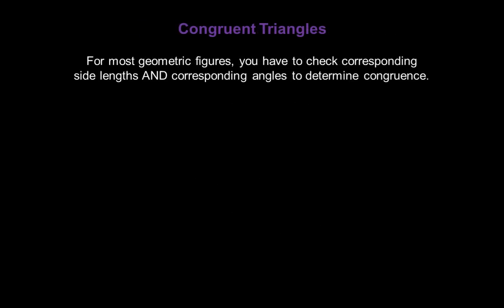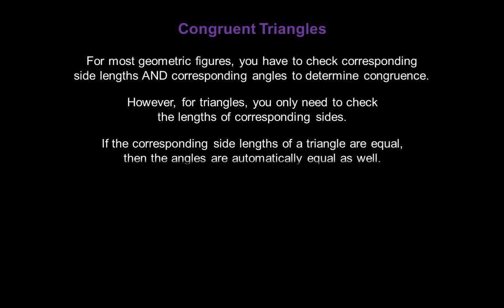For most geometric figures, you have to check corresponding side lengths and corresponding angles to determine if they're congruent. However, for triangles you only need to check the lengths of corresponding sides. If the corresponding side lengths of a triangle are equal, then the angles are automatically equal as well.